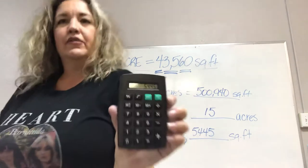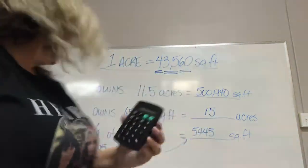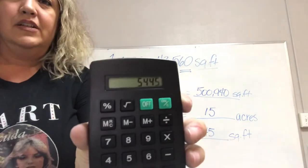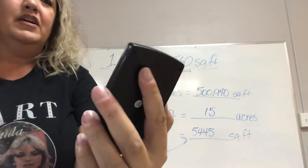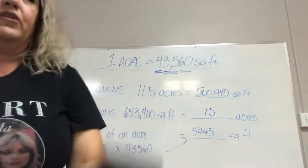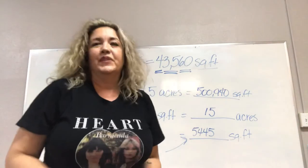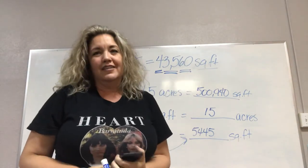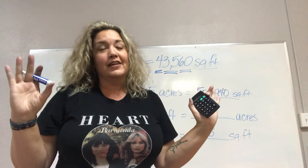One-eighth of an acre, 0.125 of an acre, is 5,445 square feet. Hopefully that helps you guys today, and see you soon for the next math lesson.